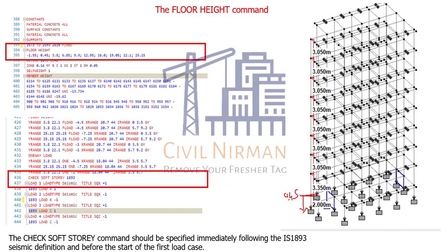The first of the floor heights should be the fixed level — the level where the supports are specified. My starting height is minus 1.55, this particular node is located at 0.45 level, and then adding values of 3.350, 3.050 you will get all the Y coordinates. The first height you have to keep in mind is your fixed level where the supports are specified. In case the supports are scattered at different levels, you can use the Y value of the one with the lowest Y coordinate.